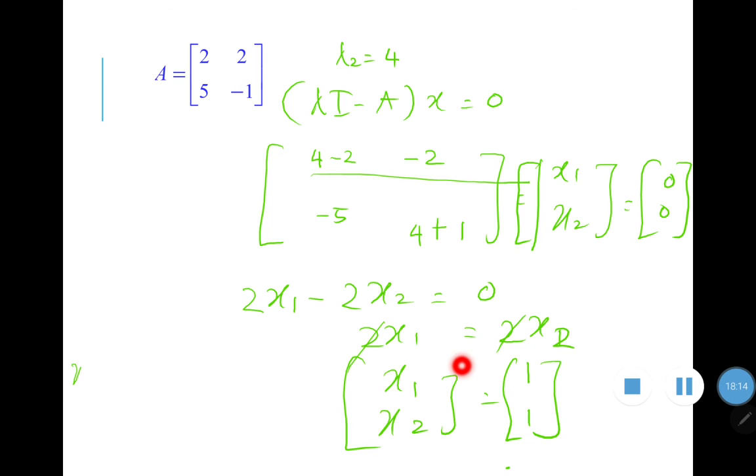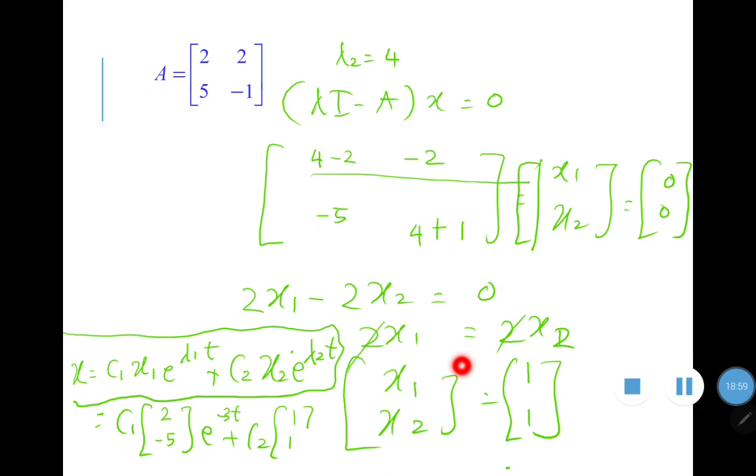So jawapan akhir macam mana. X sama dengan C1 X1 E lambda 1 T tambah C2 X2 E lambda 2 T. So C ni awak tak perlu risau sebab memang kita tak dapat. And X1 tadi dapat berapa. X1 tadi dapat 2 over negative 5 kan. So E lambda 1 tadi negative 3 T tambah C2 X2, 1, 1. E kuasa 4 T. So ni adalah jawapan akhir. So that's all for this sub chapter. Have nice holiday everyone. See you guys bye.